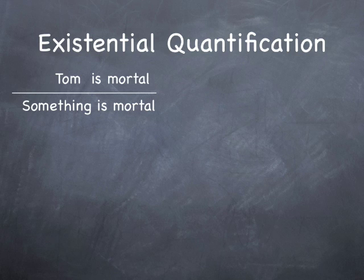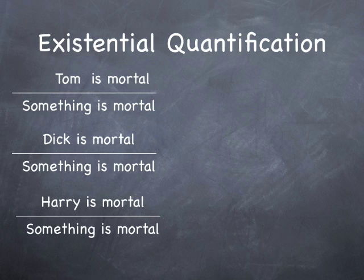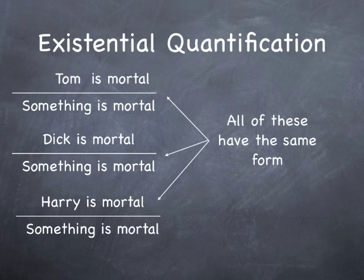Tom is mortal therefore something is mortal. Dick is mortal therefore something is mortal. Harry is mortal therefore something is mortal. You're beginning to see the pattern here. All of these have the same form and all the logic is trying to do is trying to recognize these patterns and abstract from them. That's really all there is.